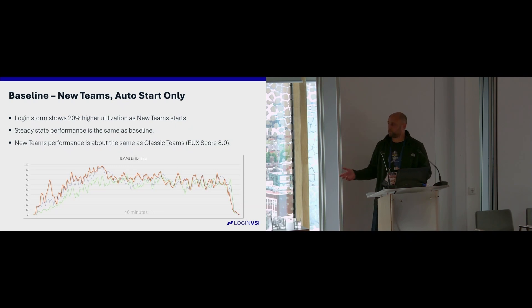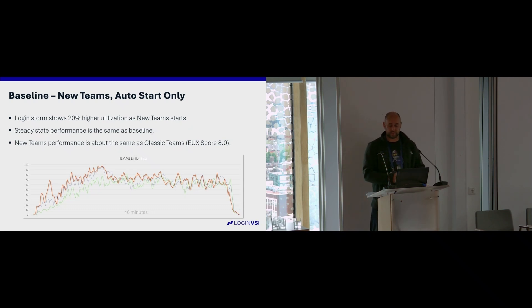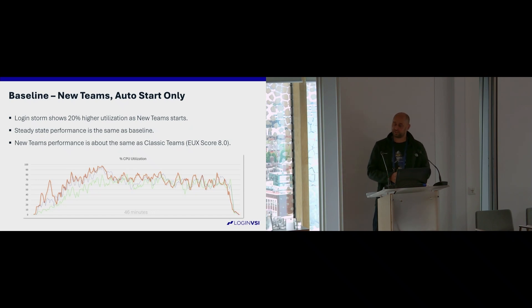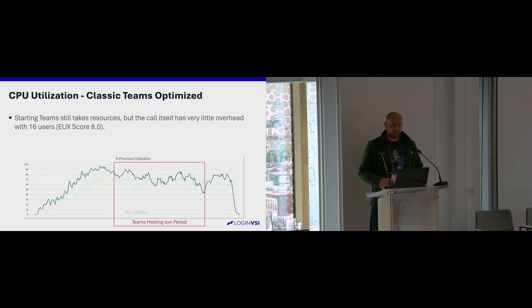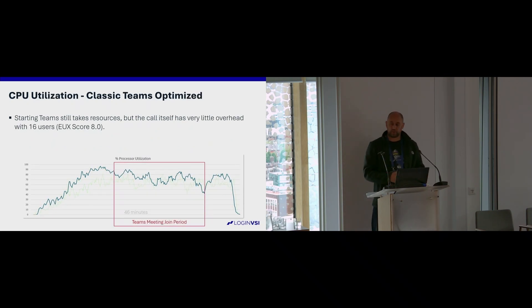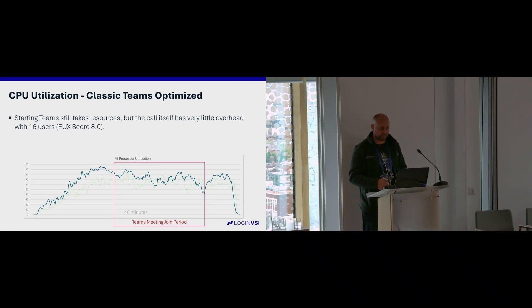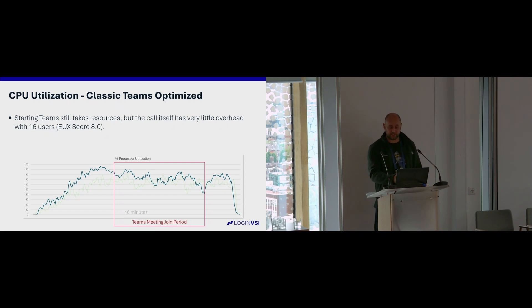Now comparing new Teams vs. classic Teams with auto-start — the orange line is the new Teams client. You can see it's roughly about the same. Then looking at Classic Teams optimized with offloading, still at 16 users on the VM. Because we're offloading, we're not maxing out the CPU — we all expect that, that's why we offload.